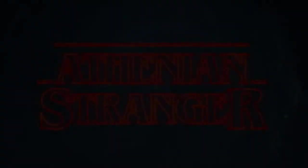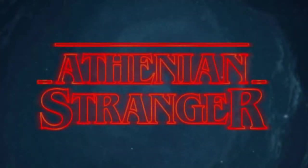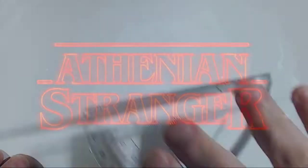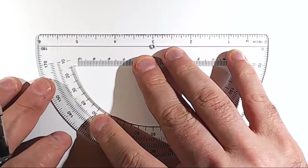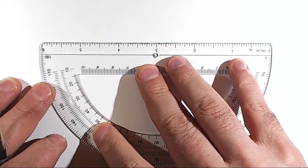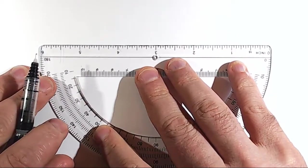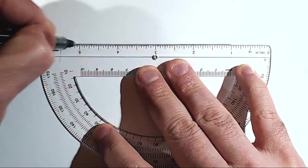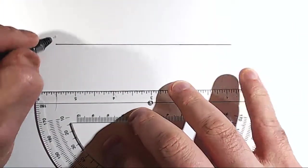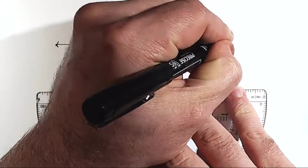All right, ladies and gentlemen, welcome back to this Athenian Stranger tutorial video where today we are going to take a look at fractional distance in just one dimension. That would be fractional distance on a number line. So let us imagine that we have here a number line.